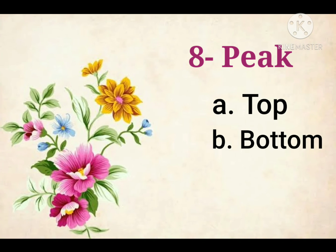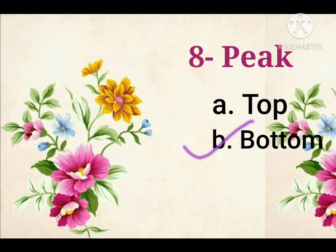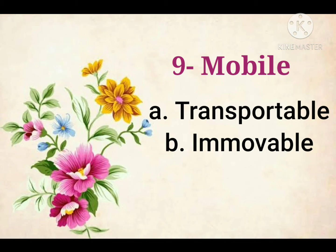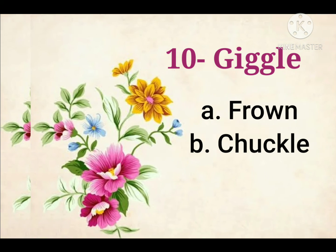Eighth is Peak. Peak means the pointed top of a mountain. So the opposite will be Bottom. Ninth is Mobile. Mobile means something that can be moved. So the opposite of Mobile is Immovable.